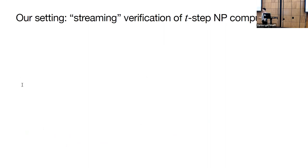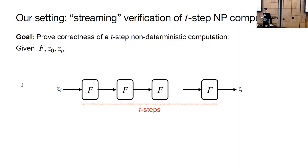The setting for our project is the following. Suppose we have a streaming computation and we want to verify its correctness in a streaming fashion. Given a function f, an initial computation state z0, and a final computation state zt, we want to check that zt is the correct output of iteratively applying f t times to z0. Since this is an NP computation, the verification statement is there exists intermediate states zi and witnesses wi such that at each time step, f applied to the state zi and witnesses wi outputs a correct new state zi plus 1.